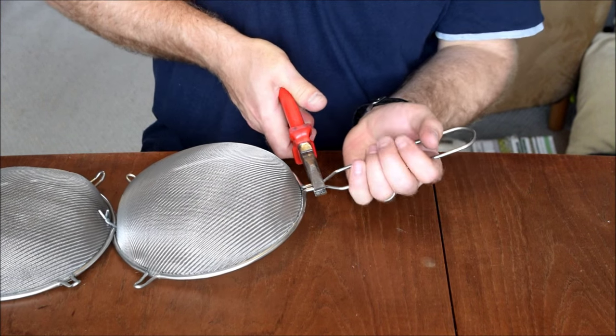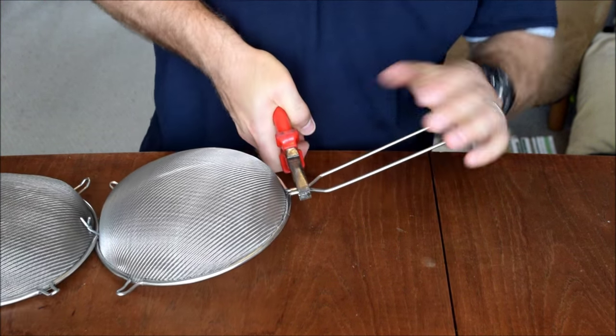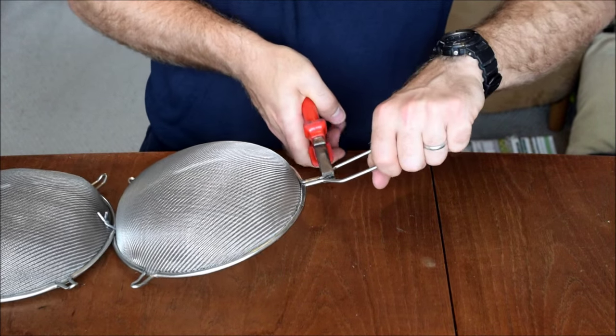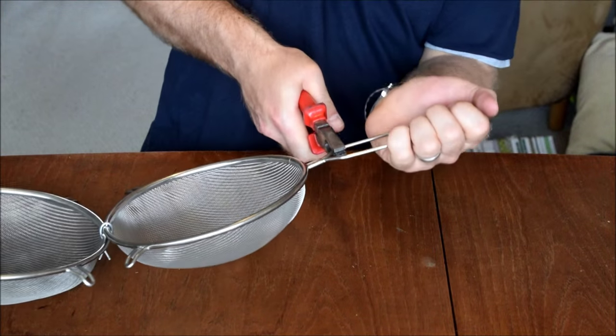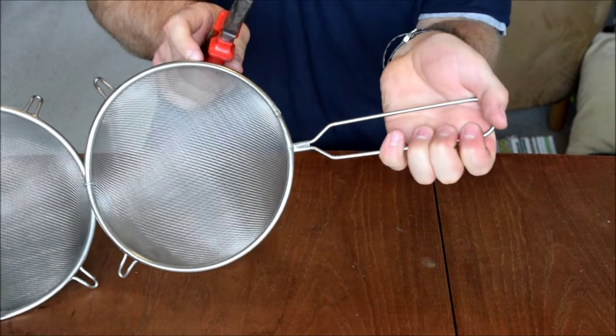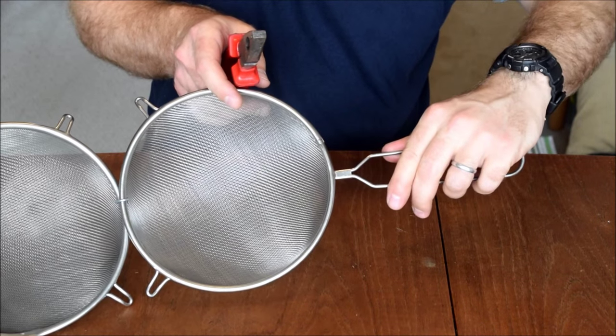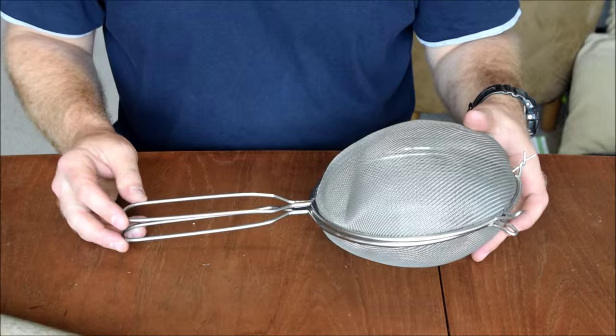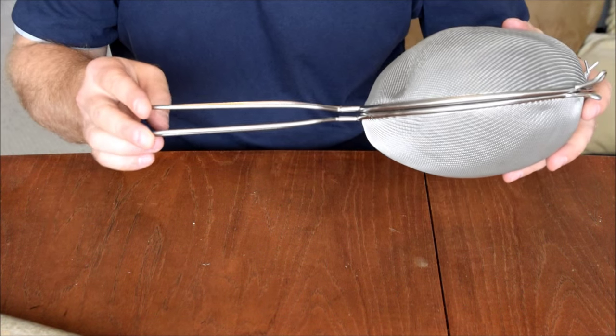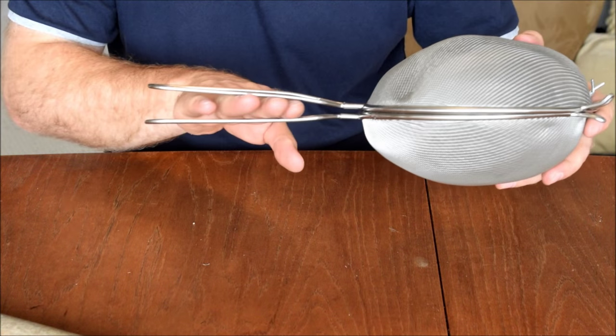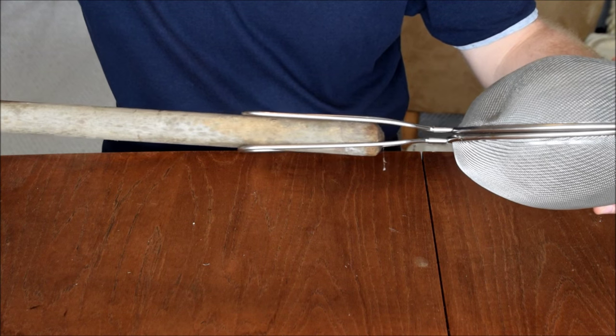While holding the sieve handle tightly with the pliers, I can bend the handle back a little bit. And then move the pliers along and bend it the other way, just to provide a slight curve in the handle. I need to do that to each of the two sieves. So after a bit of effort bending them, and I did have to get down on the floor and put some effort into it, you can see the handles now have a gap between them, and that will sit nicely over the broom handle.